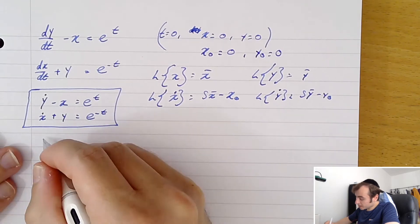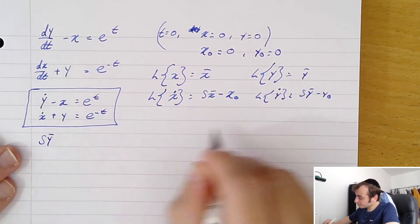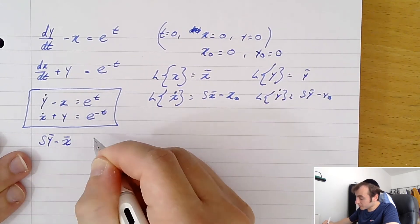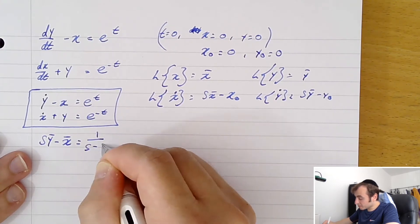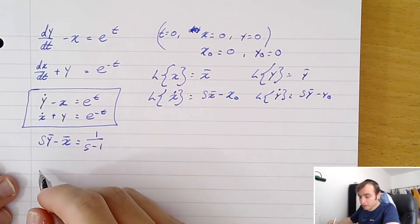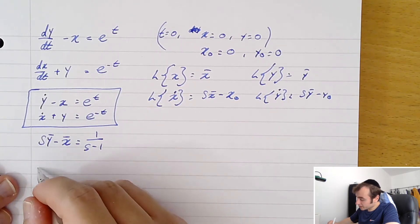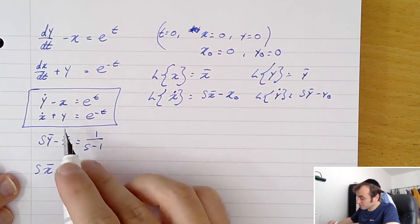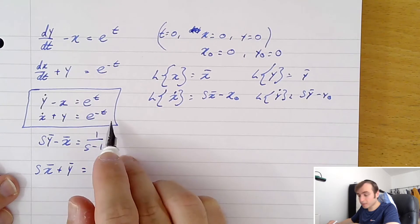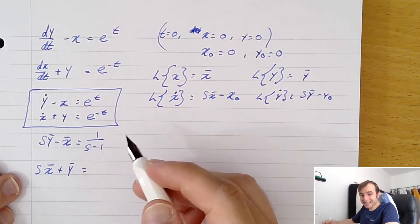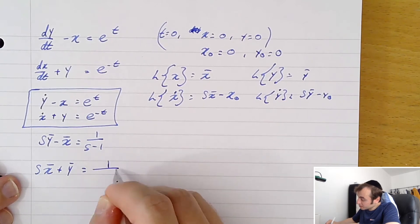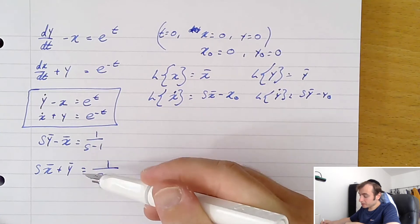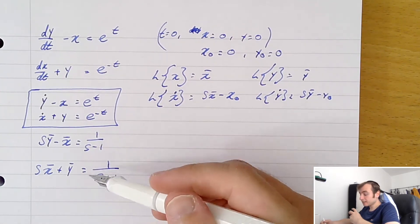The first transformed equation becomes: s·y-bar minus y-naught (which is zero) minus x-bar equals 1/(s−1), since the Laplace transform of e to the t is 1/(s−1). The second transformed equation is: s·x-bar minus x-naught (zero) plus y-bar equals 1/(s+1), since the Laplace transform of e to the minus at is 1/(s+a), and here a equals one. We now have our two simultaneous equations set up as a linear system.